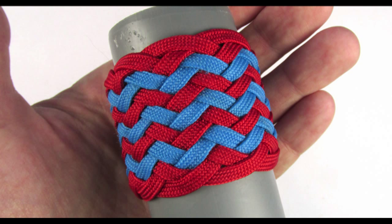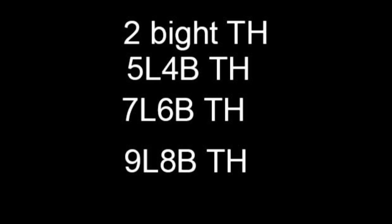The way I do it is to expand a 2-bight Turk's head into a 4-bight one, a 5-part 4-bight Turk's head that is, then into a 7-part 6-bight Turk's head, and finally I expand that into a 9-part 8-bight Turk's head.